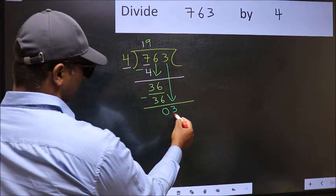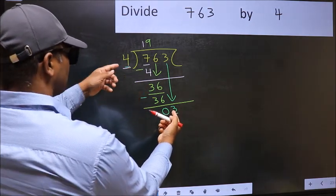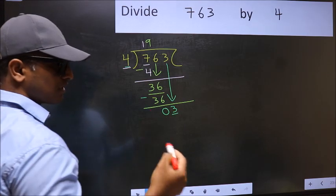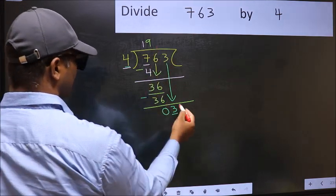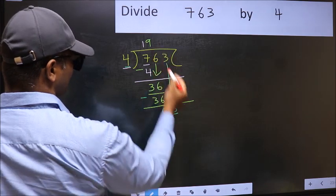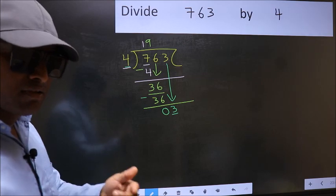Here we have 3 and here 4. 3 is smaller than 4. So what many do is, they directly put a dot and take 0. Which is wrong.